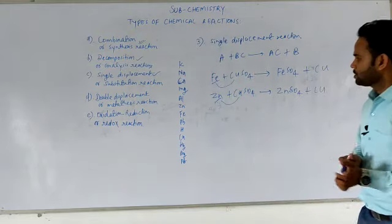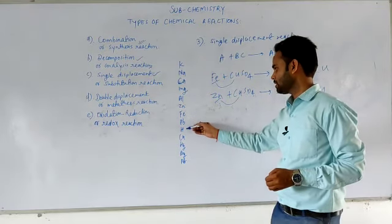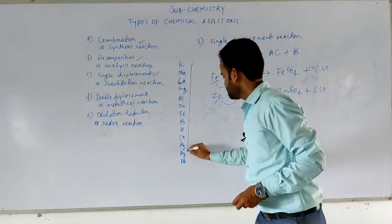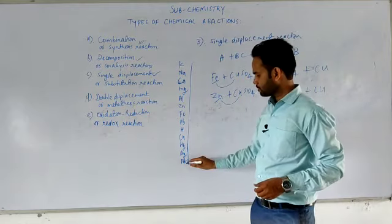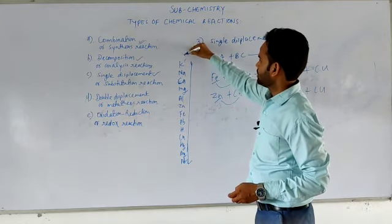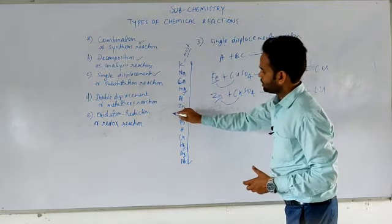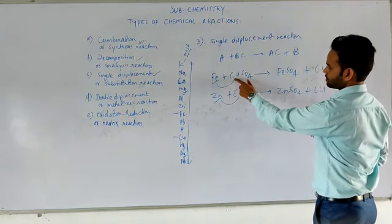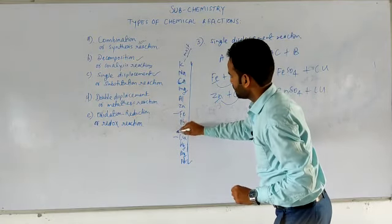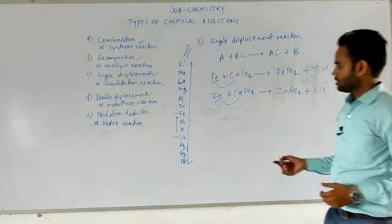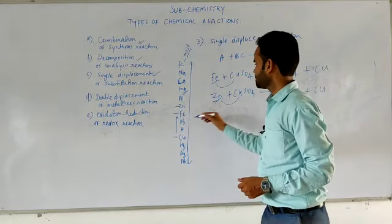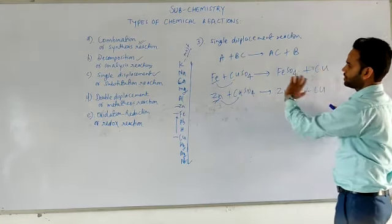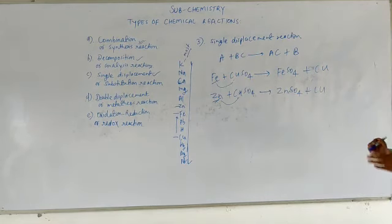The reactivity series lists: potassium, sodium, calcium, magnesium, zinc, iron, lead, hydrogen, copper, mercury, silver, and platinum. Platinum is the least reactive and potassium is the most reactive. You can see that iron is above copper, meaning iron is more reactive than copper — that's why iron displaces copper from its compound. Similarly, zinc is more reactive than copper, which is why these substances can replace copper from its compound. This is why we call it single displacement reaction.